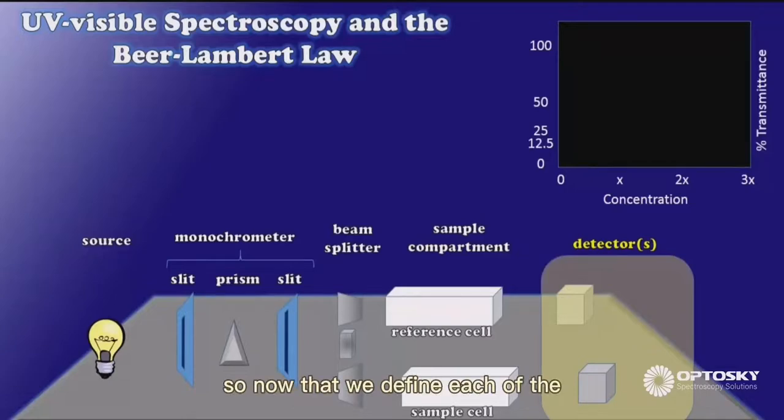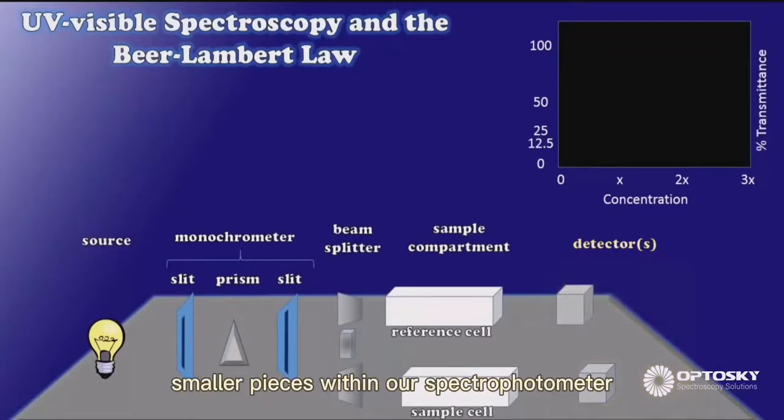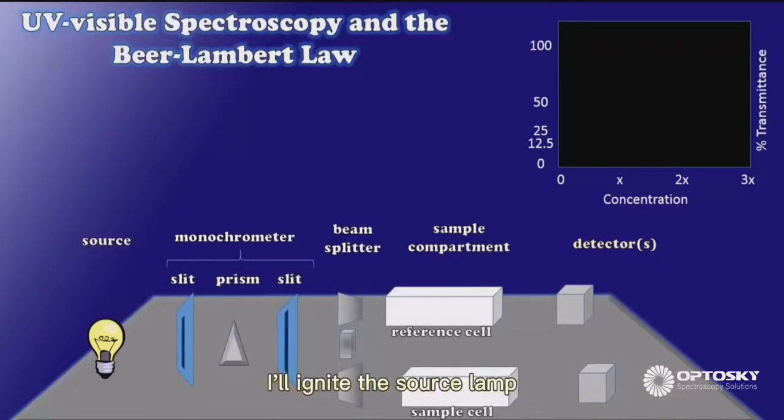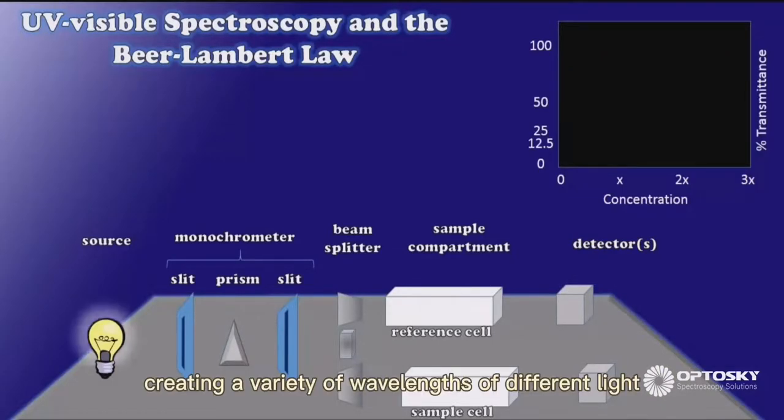So now that we've defined each of the smaller pieces within our spectrophotometer, let's turn it on and see what happens. I'll ignite the source lamp, creating a variety of wavelengths of different light.